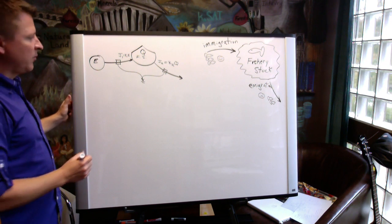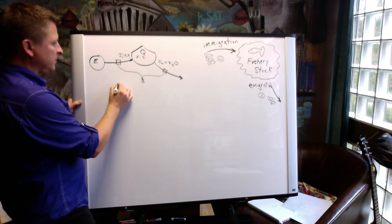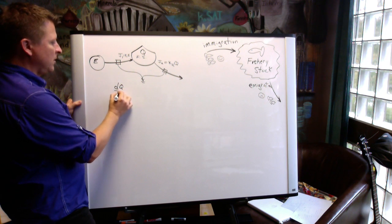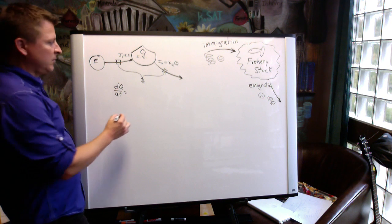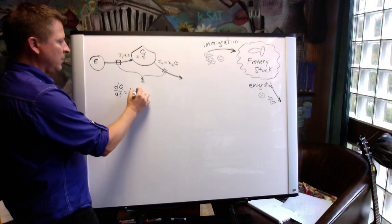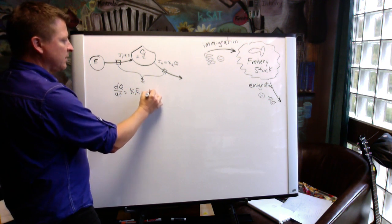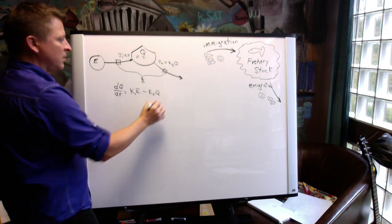So now we can write our difference equation. So DQ/DT is the inflows minus the outflows. So it's K1 E minus K2 Q.